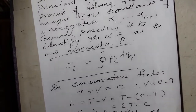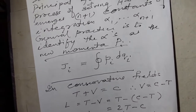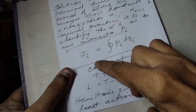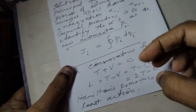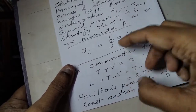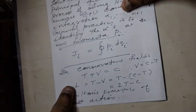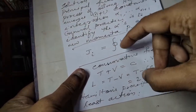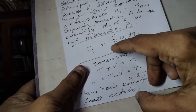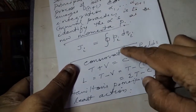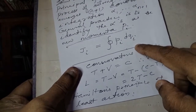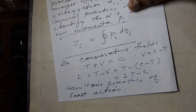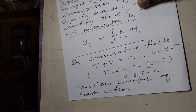This is called Action Variables. Action variables Ji: J1, J2, etc. Ji equals the integral of pi dqi. This is called the Action Integral.